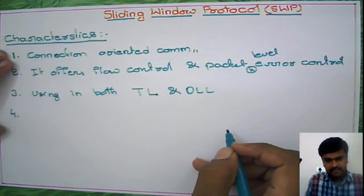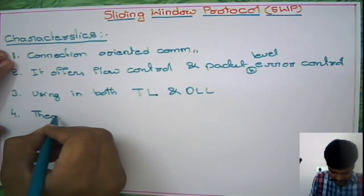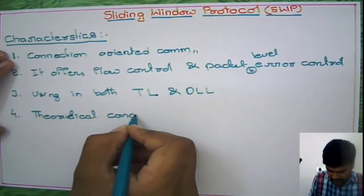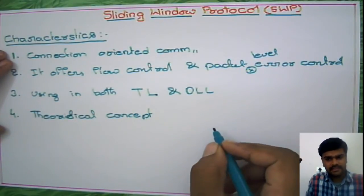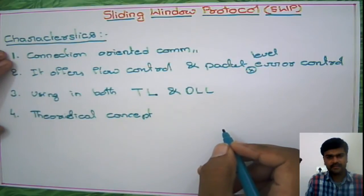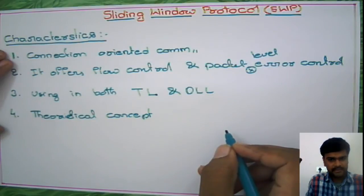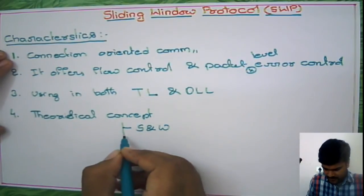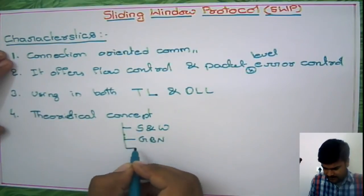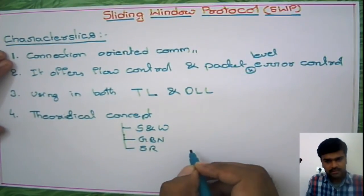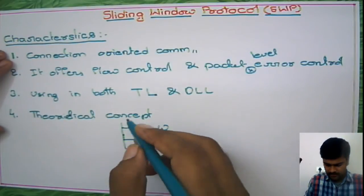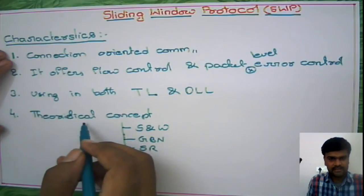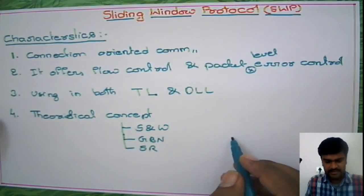The sliding window protocol is a theoretical concept — it is not directly implementable. It provides guidelines and suggestions and serves simply as a reference. The actual implementable protocols are Stop and Wait, Go Back N, and Selective Repeat. These three are the implementable things, but the sliding window protocol itself is not implementable — it is a theoretical concept. These are the main characteristics of the sliding window protocol.